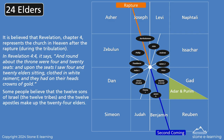It is believed that Revelation chapter 4 represents the church in heaven after the rapture, during the tribulation. In Revelation 4:4 it says, 'And round about the throne were four and twenty seats, and upon the seats I saw four and twenty elders sitting, clothed in white raiment, and they had on their heads crowns of gold.' Some people believe that the twelve sons of Israel, the twelve tribes, and the twelve apostles make up the twenty-four elders.